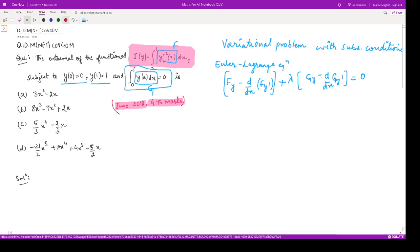Let us calculate what these are in our equation. f is y dash square, so f_y is 0. What is g? g is y.